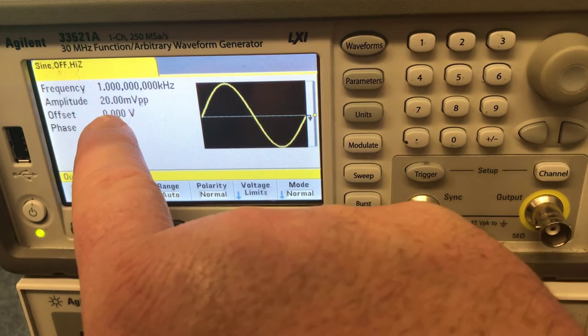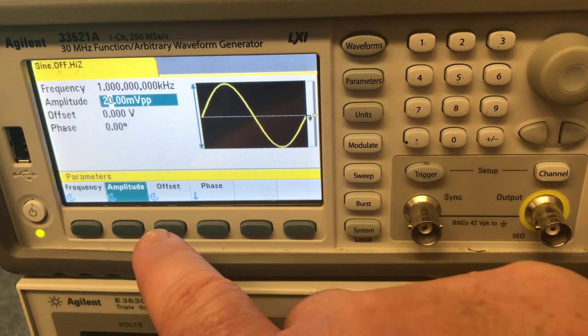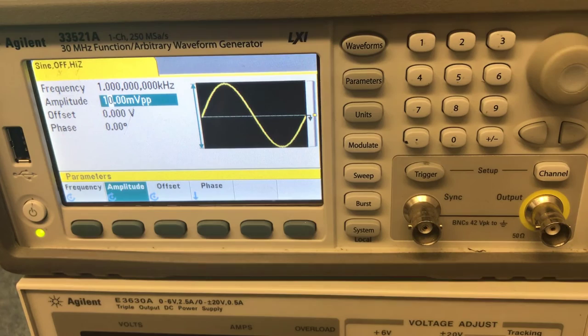Now, you'll notice that it actually went ahead and adjusted that up to 20 millivolts peak to peak. So we need to go in and adjust that again. So let's go to parameters, amplitude, and then I can take that down to 10. And so now we're good.